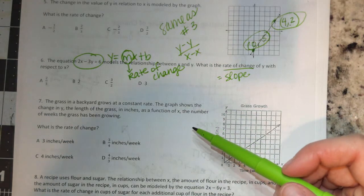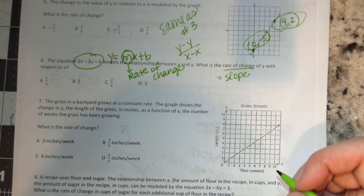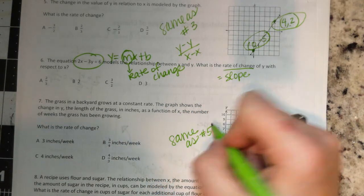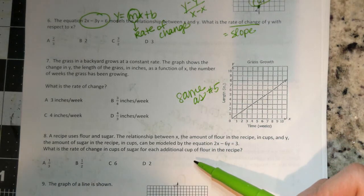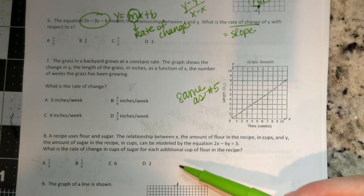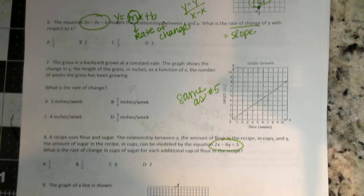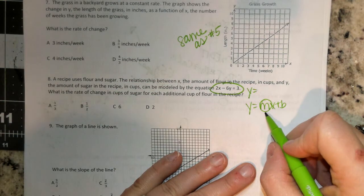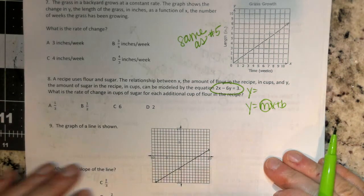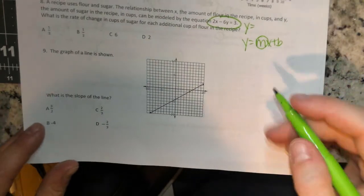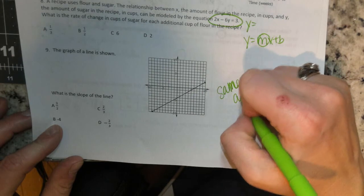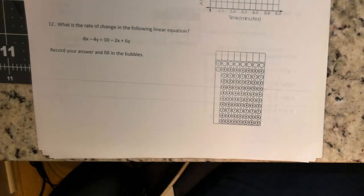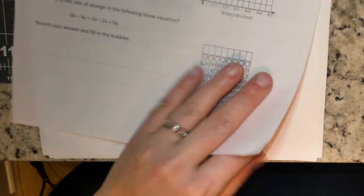Number 7. The grass in the backyard grows at a constant rate. The graph shows the change in Y, the length of grass in inches, as a function of X, the number of weeks the grass has been growing. So you are going to do number 7 the same as number 5. You are going to need to find your points. Number 8. The amount of rate of change between sugar and flour in a recipe. So here is your function. Set it equal to Y. Get it in Y equals. Y equals MX plus B. Whatever ends up being in front of your X, after you get it equal to Y, it is going to be your slope. Number 9. Same thing. Same as number 7. Find two points, get the coordinate points there, and then subtract your X's and your Y's.